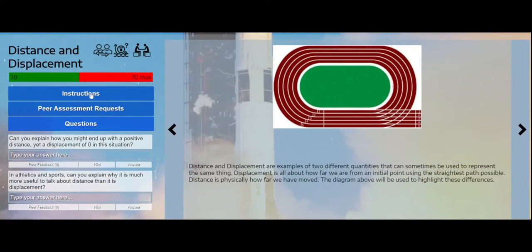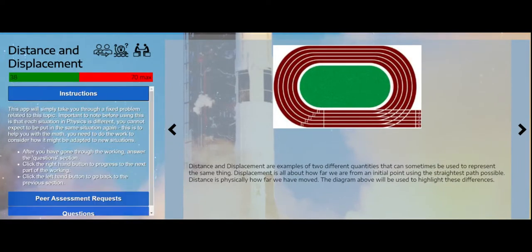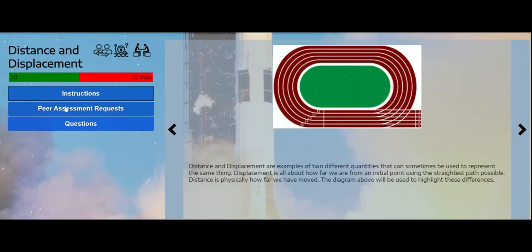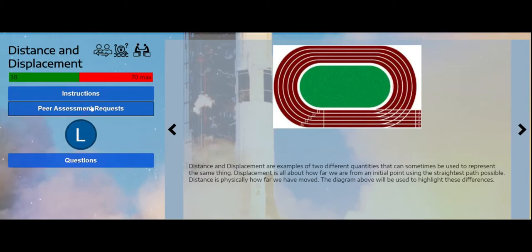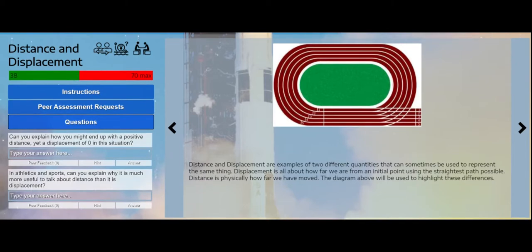And it comes up with this screen. Again, you've got instructions on how to use this, you've got your points bar, you've got peer assessment requests which we'll look at in detail later, and you've got your questions, so no predictions for these. And on the right-hand side, you've got your worked examples.